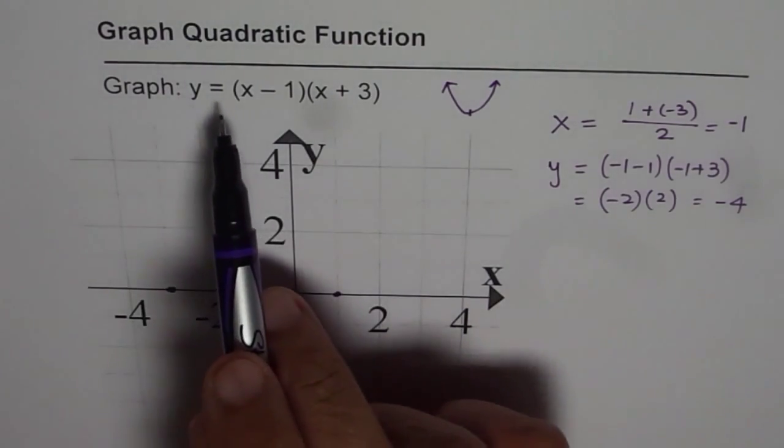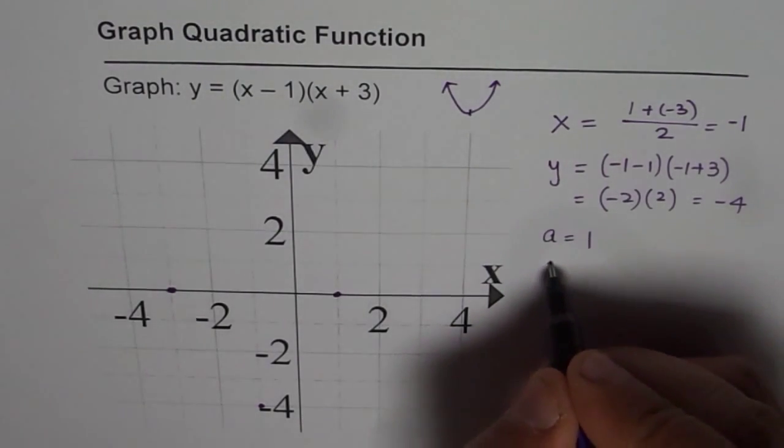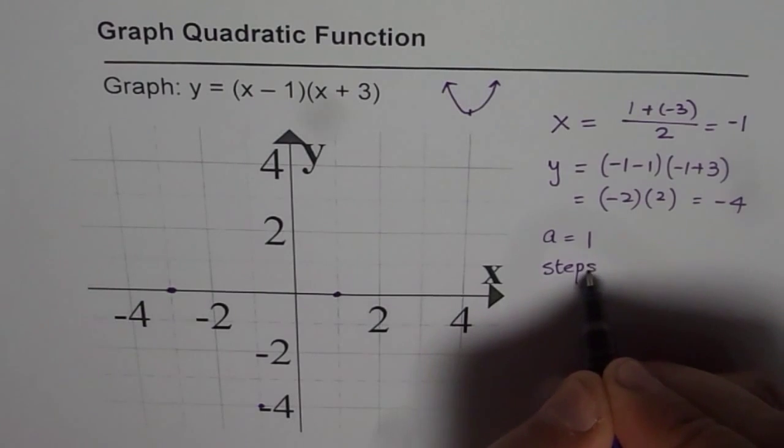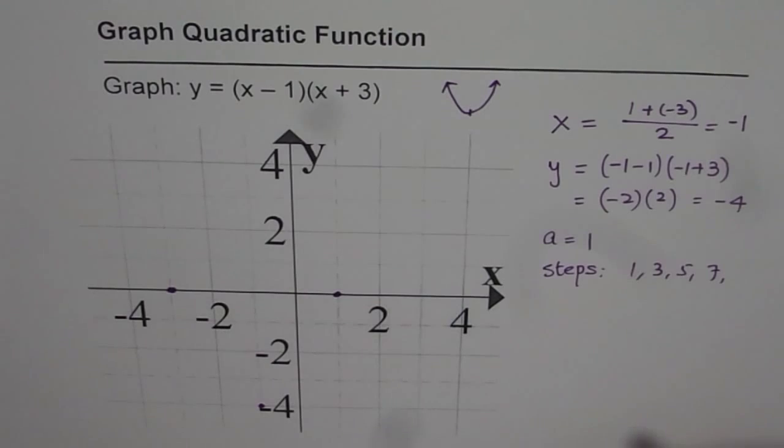Now, since a value is 1, we know a equals 1. Therefore, the steps involved are 1, 3, 5, 7. Now, these steps will also verify whether, till now, whatever we have got is correct or not.